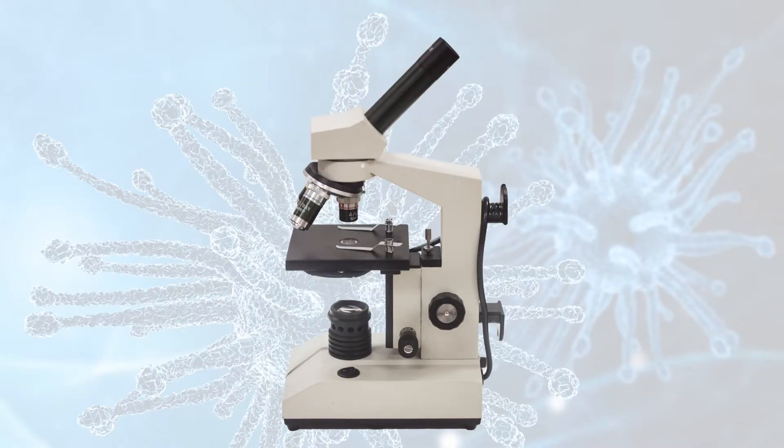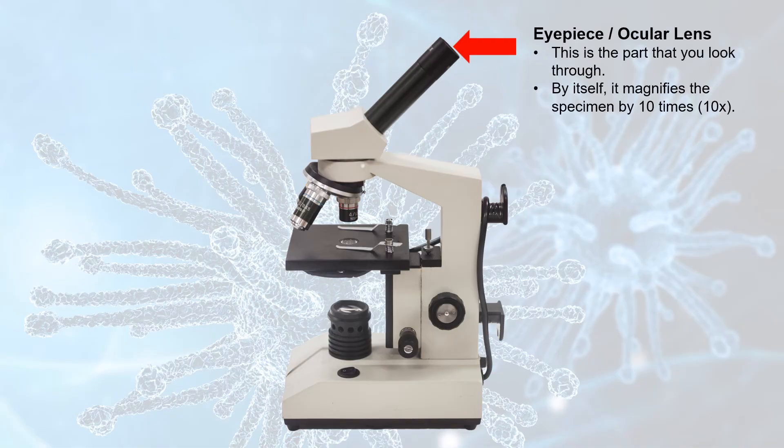In order to properly use the microscopes in our lab at school, you need to know the names and functions of the different parts. Let's start out with the eyepiece, also known as the ocular lens. This is the part of the microscope that you look through. By itself, it also makes the specimen look bigger, having a magnification of ten times. In other words, just looking at the specimen through the ocular lens alone would make it look ten times bigger than it actually is in real life.